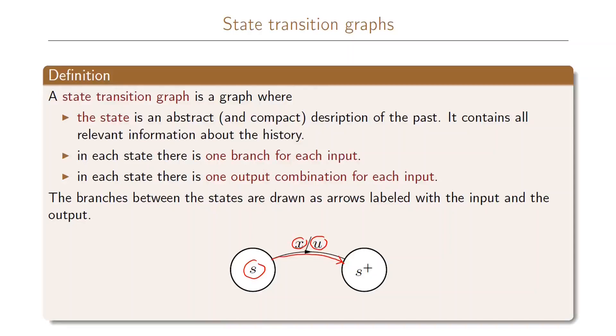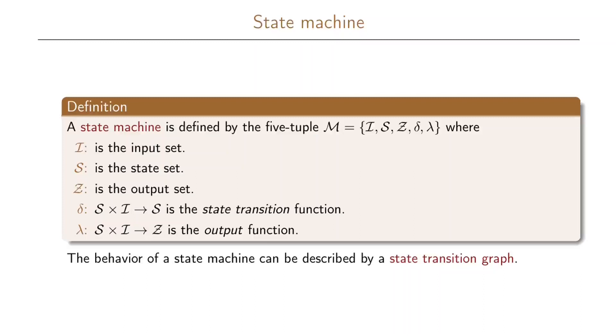We also need to define what is the corresponding output that we get. The state transition graph is used to define a state machine.